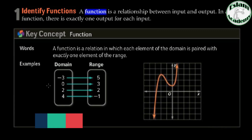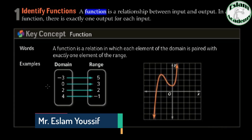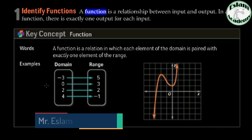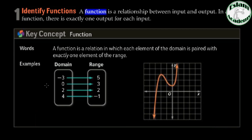If there is any element of the domain connected 2 times, it means this relation is not a function. If there is any element of the domain that doesn't connect with any element of range, it also means this relation is not a function.